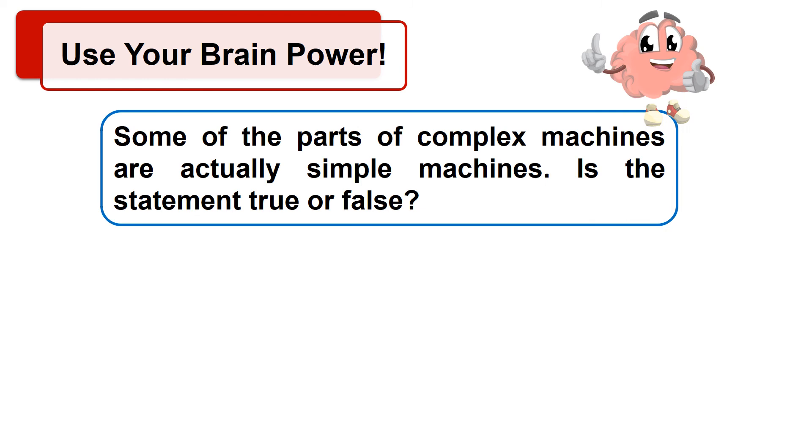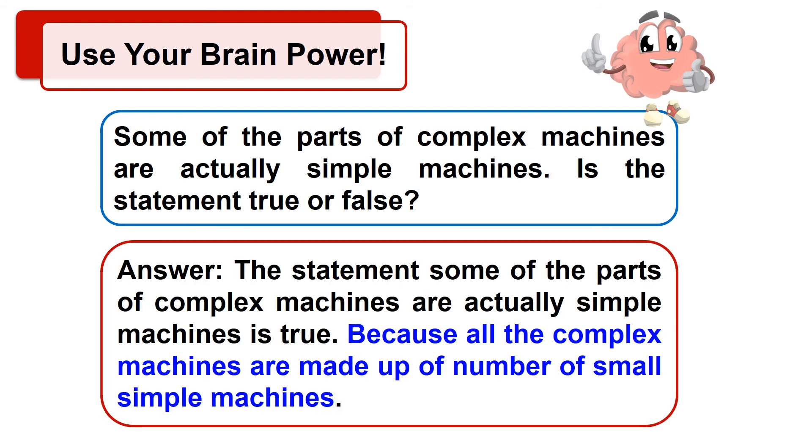Now use your brain power to solve the following question. Some of the parts of complex machines are actually simple machines. Is the statement true or false? The statement some of the parts of complex machines are actually simple machines is true, because complex machines are made up of a number of small simple machines.